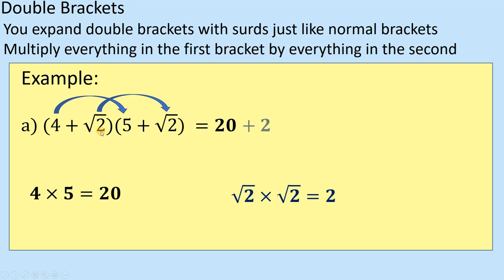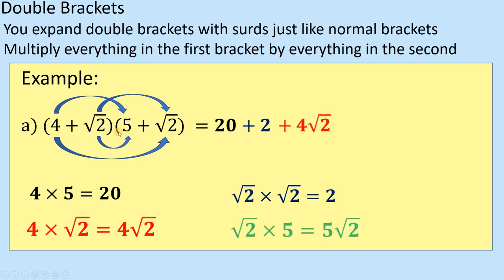Then we're going to do it underneath. So we're going to do the 4 times the root 2, which is just going to be 4 root 2, because one's a whole number and one's just a surd. And then we're going to do this one, which is going to be 5 root 2, which is that one there. So you'll end up with that lot. So now we just look to simplify.